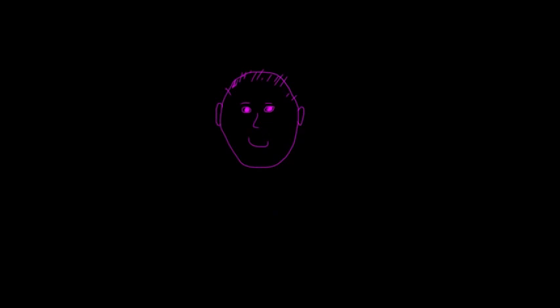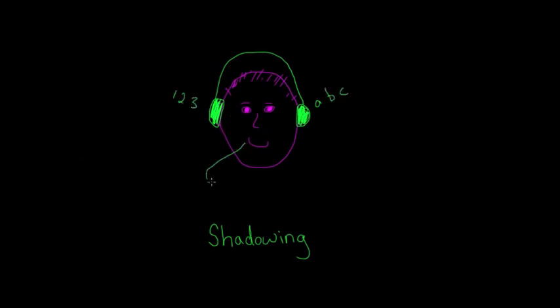One way to study selective attention is to observe people while they're doing something called a shadowing task. In this task, you're wearing a pair of headphones, but different information is coming in through each earpiece. So through the left ear you're hearing one thing, and through the right ear you're hearing something completely different, maybe a different person's voice, maybe a different language even. And you're told to repeat everything that's said into one ear, say your right ear, so you have to pay attention to it, and to ignore the other.